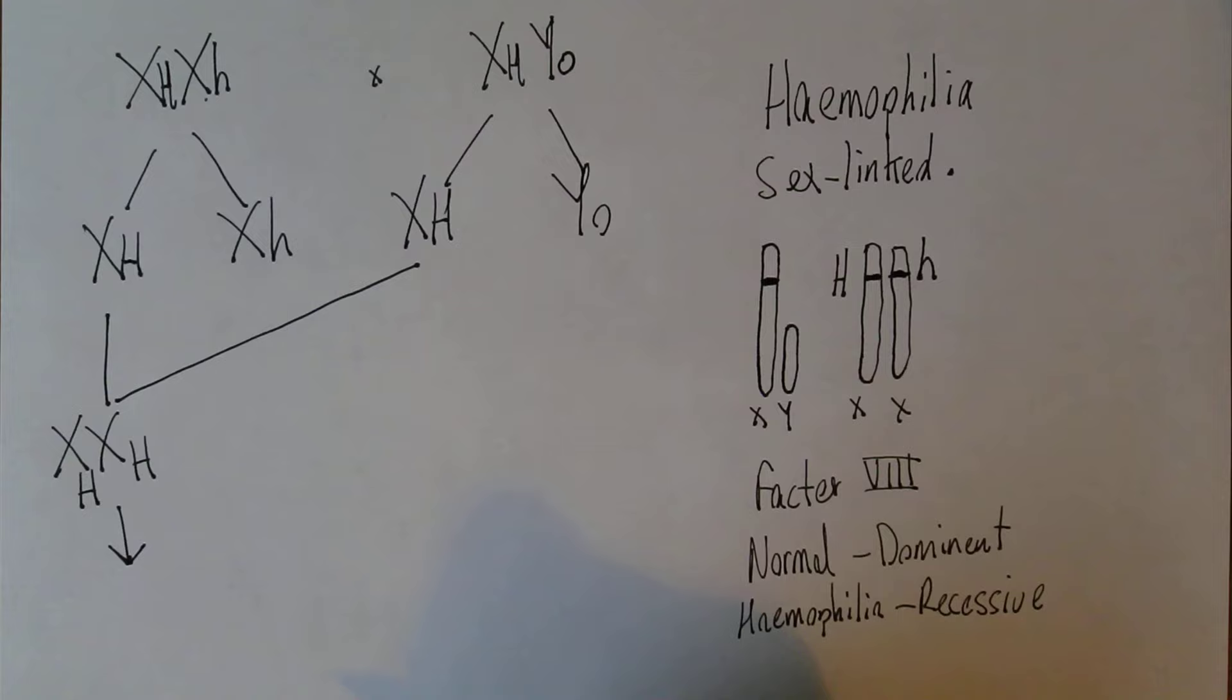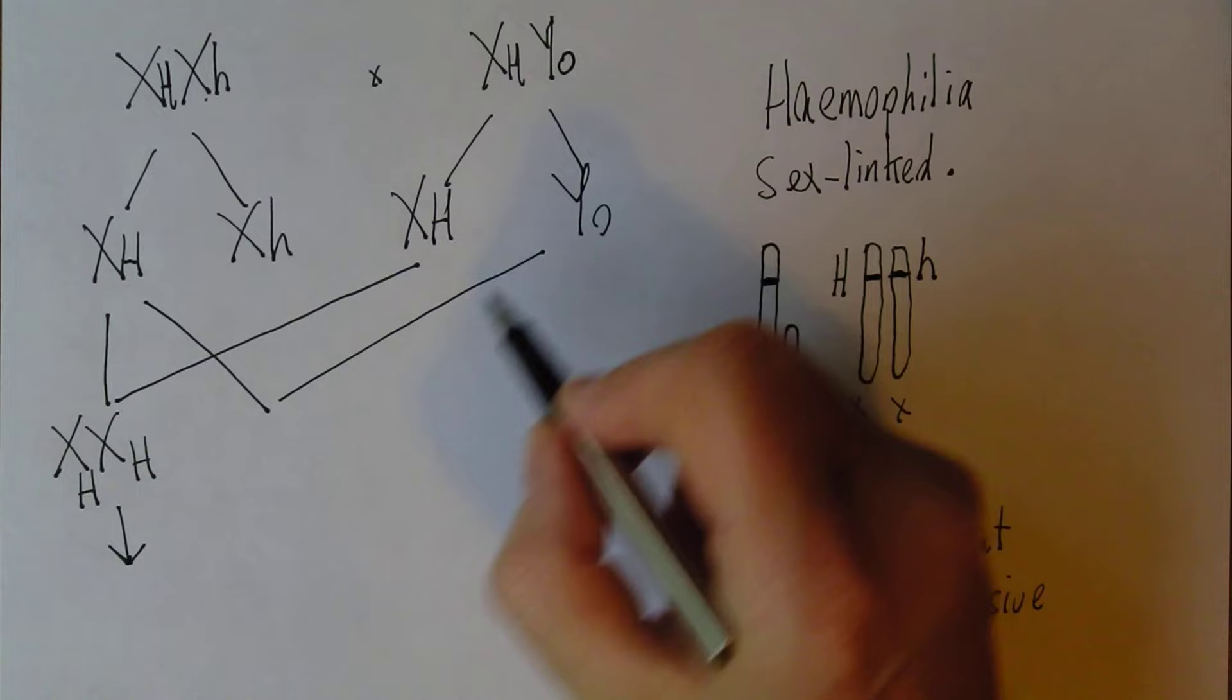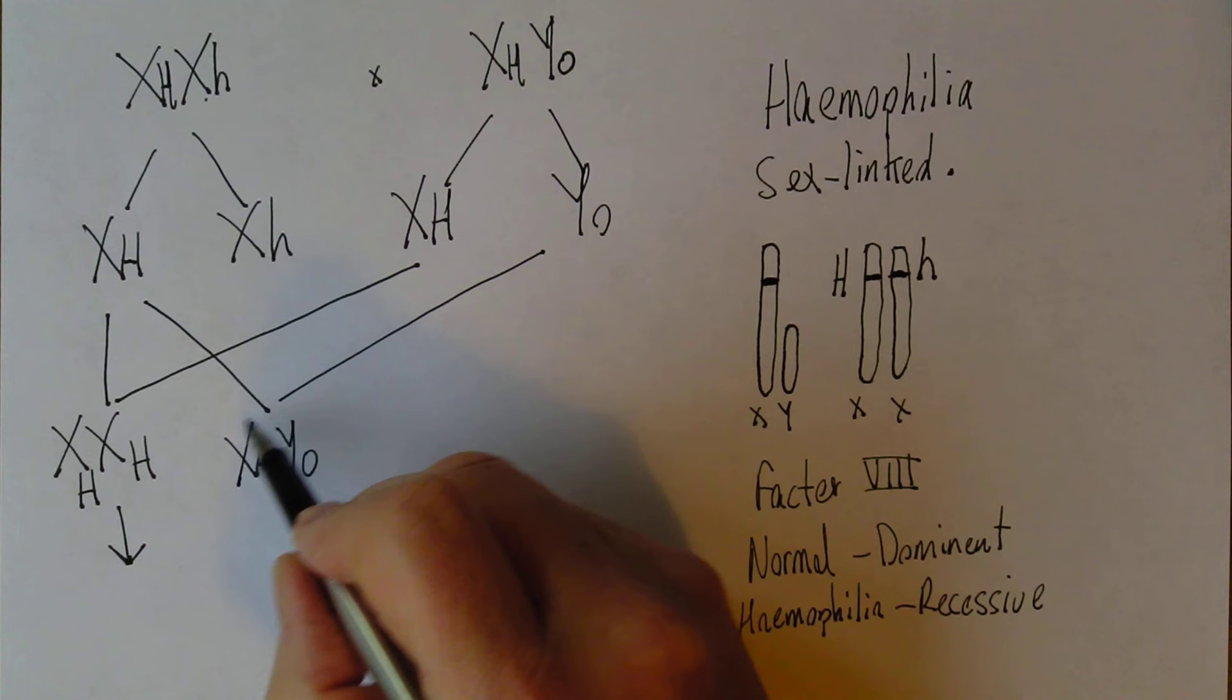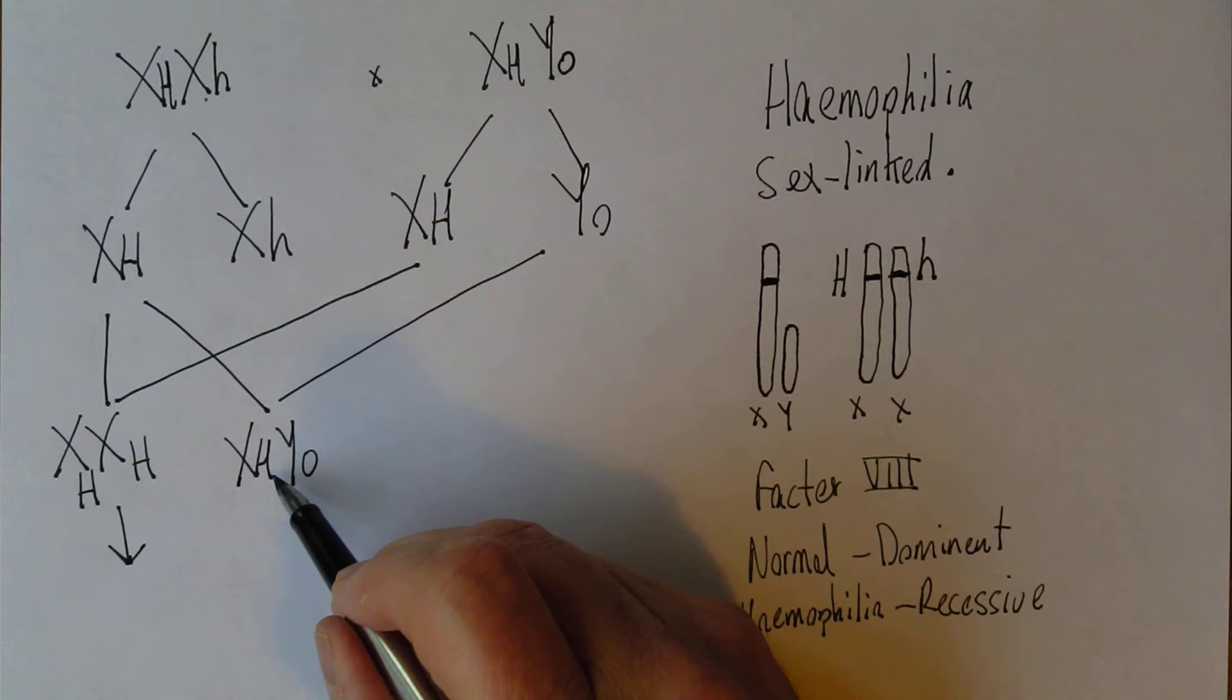Another possibility is that X H there combines with that Y zero, and there we have a boy who does not suffer from haemophilia because he's got one copy of the normal dominant gene. This is what most men are, in fact, which is good.